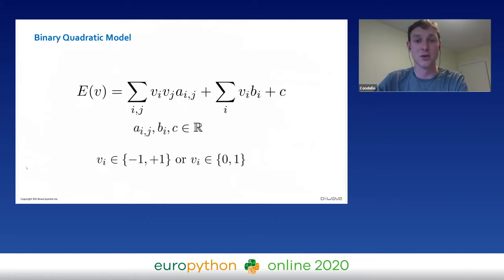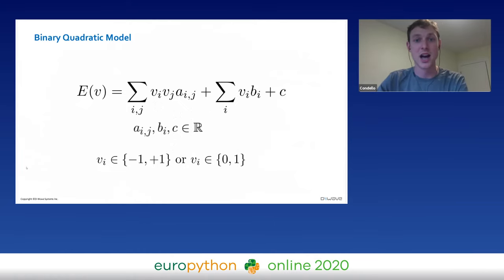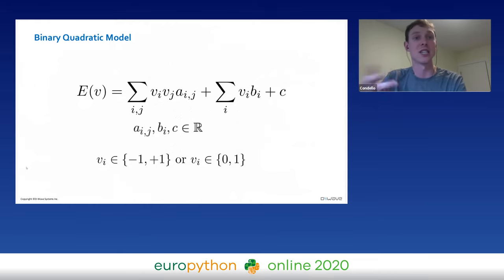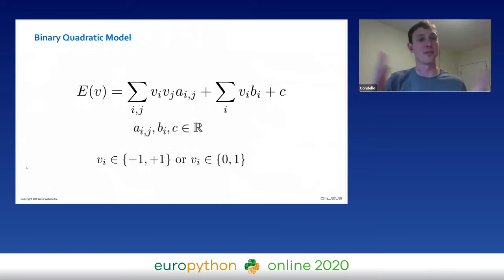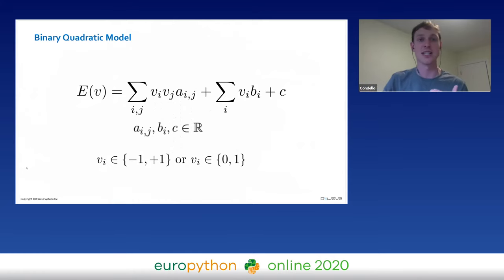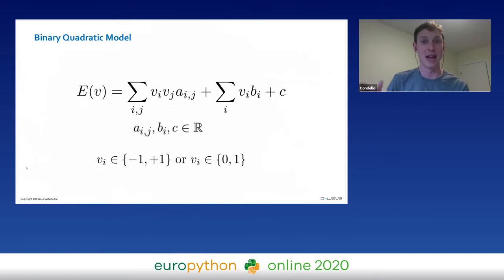The other thing to note is the first term in the equation: V_i * V_j * A_ij. This is the quadratic part of the problem — this is what makes these problems difficult. This is that second-order interaction between the different pipes and network vertices. It's not just 'pick the cheapest set of vertices' — it's pick the cheapest set of vertices subject to the requirement that each pipe has a sensor.